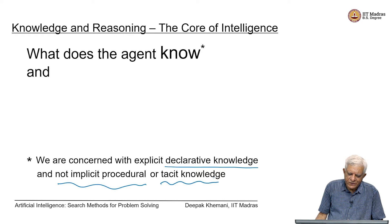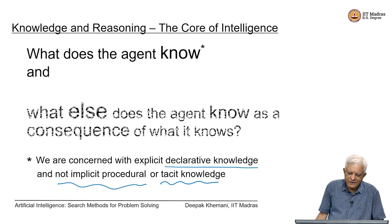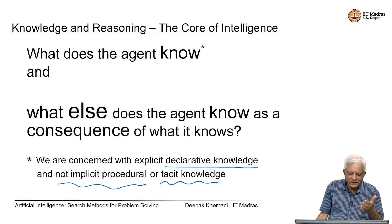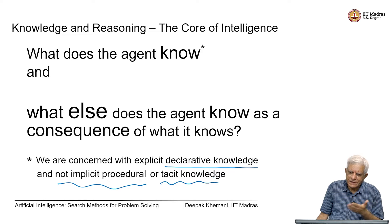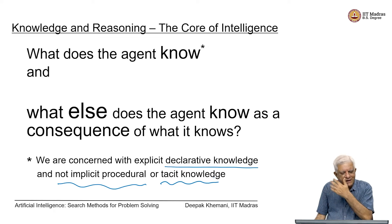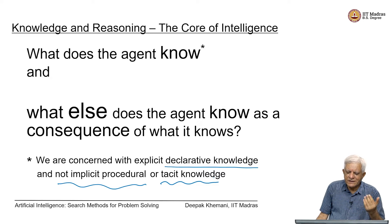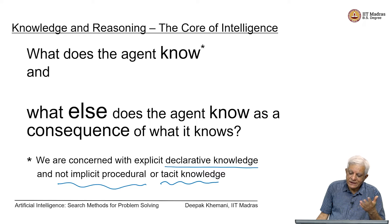If an agent has some knowledge in its repository, we also want to ask: what else does the agent know? What kind of inferences can be made? Inferences can be of different kinds — for example, plausible inferences: if you see clouds in the sky, you may say it is likely that it would rain.